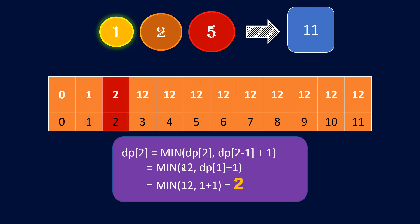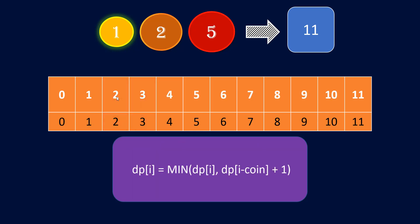For amount 1, the minimum of 12 and 1 is 1, so dp[1] becomes 1. For amount 2, dp[2 minus 1] is dp[1] which is 1, plus 1 gives 2. Minimum of 12 and 2 is 2, so dp[2] gets updated. Similarly for 3 and all other amounts. Using only coin 1, these are the number of coins required to form each amount.